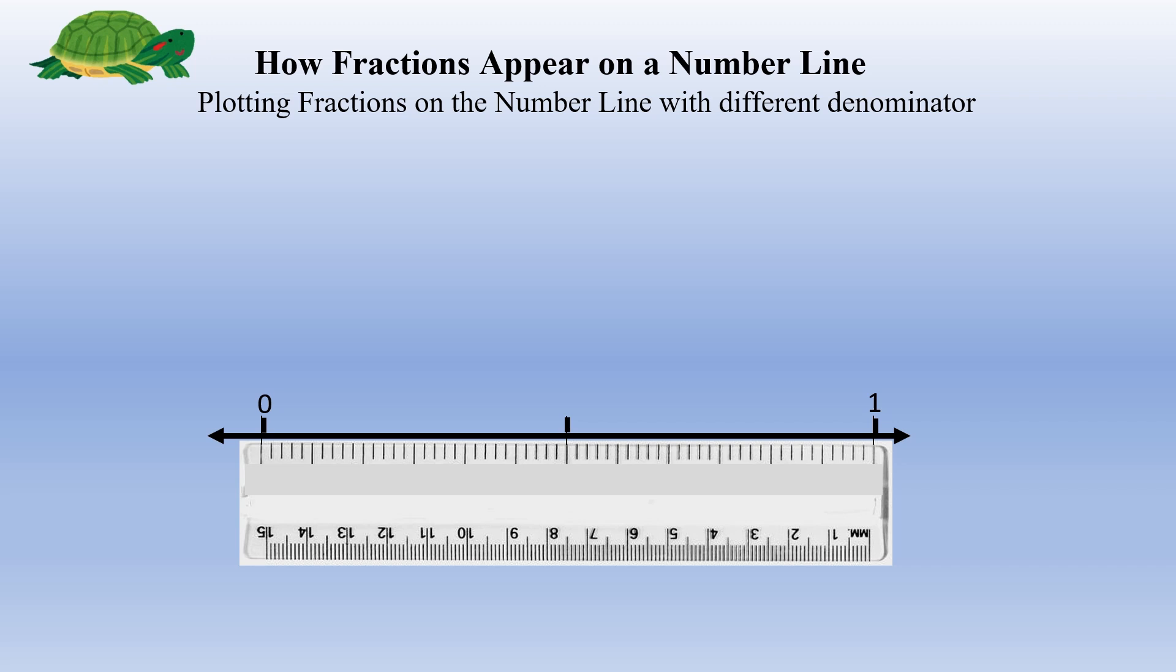Now here, let's plot 1 by 2. For 1 by 2, you divide 0 to 1 into 2 equal parts. So 1 by 2 will be placed exactly halfway between 0 and 1.